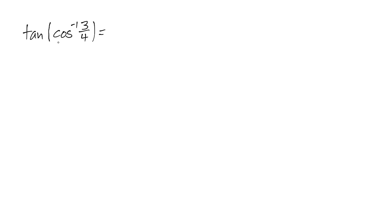So let's simplify this problem by calling cosine inverse of 3 fourths just some angle. So let's say theta is equal to cosine inverse of 3 fourths. Now, by the definition of cosine inverse, that means that cosine of theta is equal to 3 fourths.